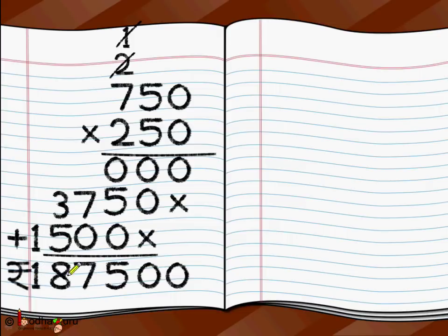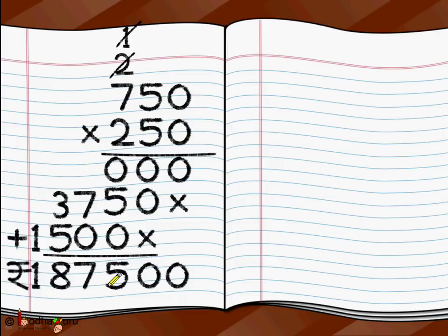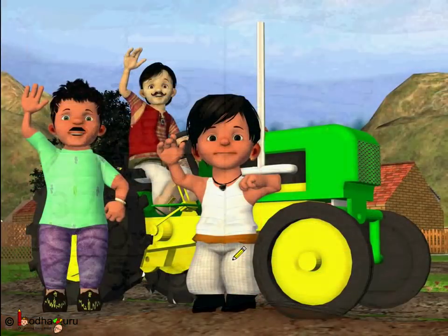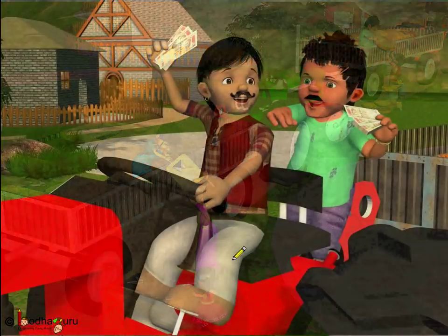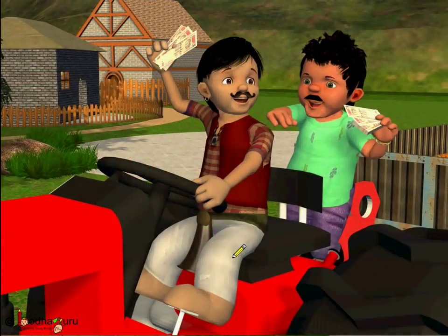The villagers made 1 lakh 87,500 rupees by selling 250 garments at 750 rupees per garment. They had collected 43,750 rupees as investment and made 1 lakh 87,500 rupees jointly — so their 43,750 rupees became 1 lakh 87,500 rupees. All the villagers were very happy, their money multiplied, they worked together and their prosperity multiplied. Stay united — unity is strength, and that way you can do a lot of things together and be happy. Bye-bye children!